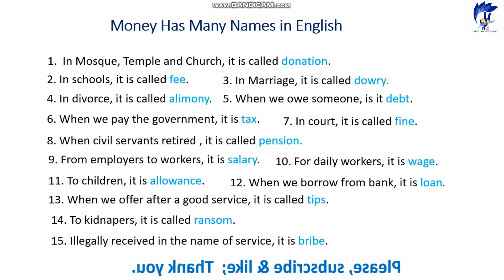Number five: when we owe someone it is debt. Number six: when we pay the government it is tax. It's a really helpful system for the people. People pay tax to the government around the world.